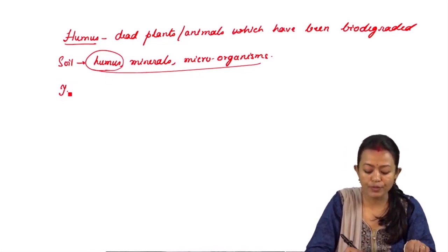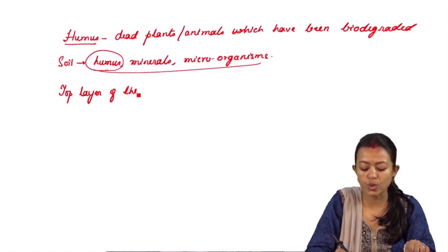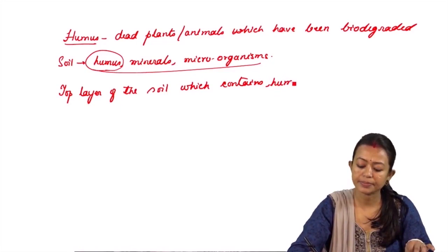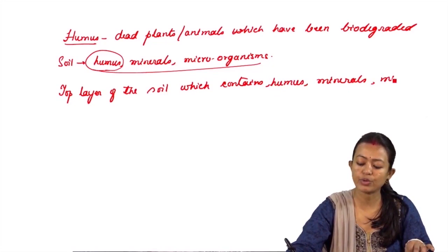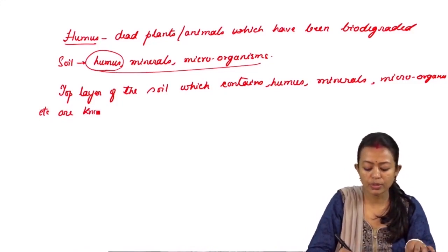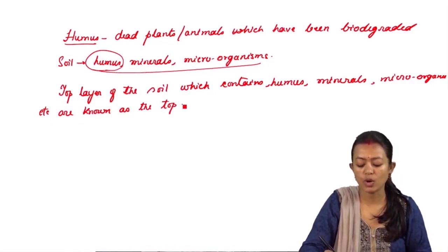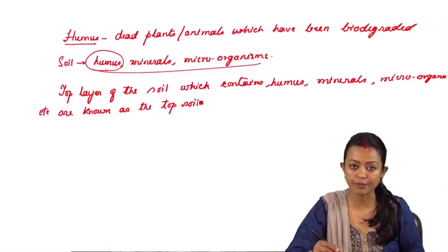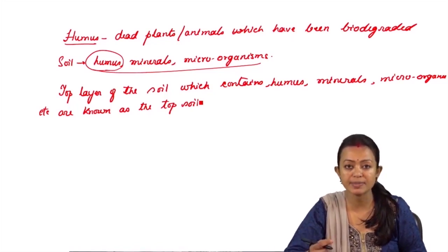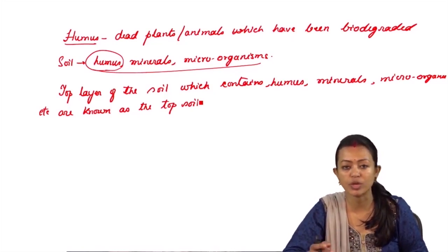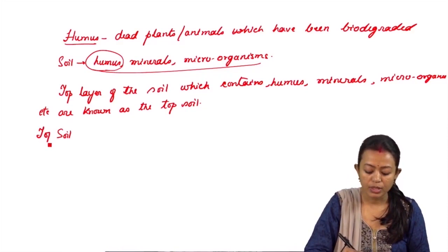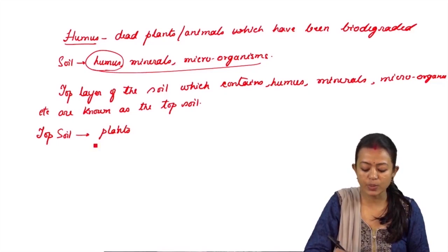The top layer of the soil, which contains humus, minerals, microorganisms, and so on, is known as the topsoil. It is the topsoil that supports life — whether the life of a plant or other living organisms such as microorganisms, worms, beetles, and small insects. The topsoil is very important for both plants and animals.